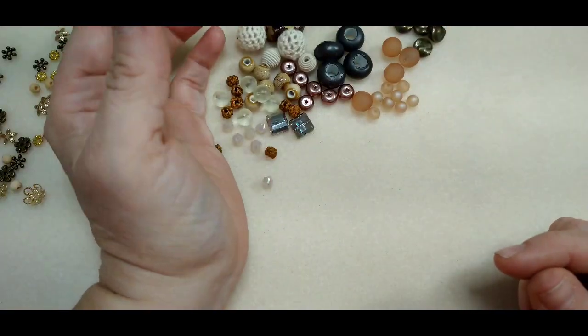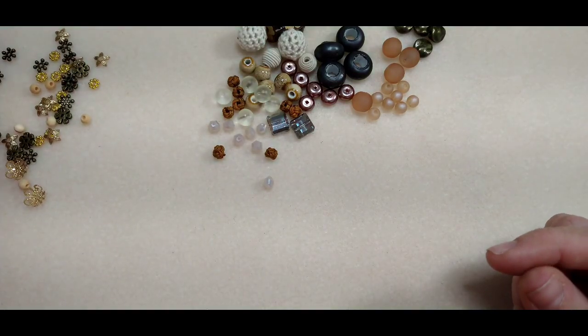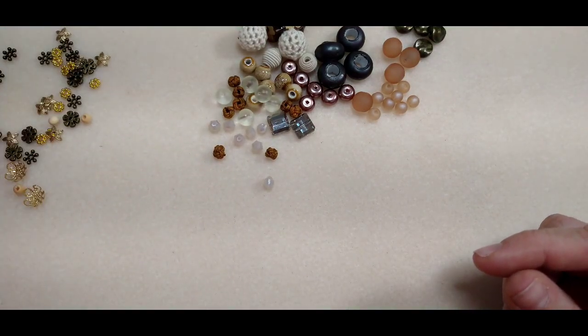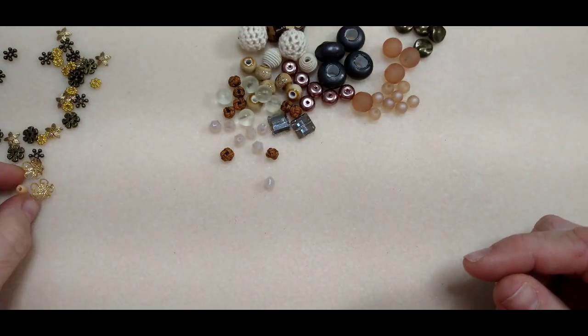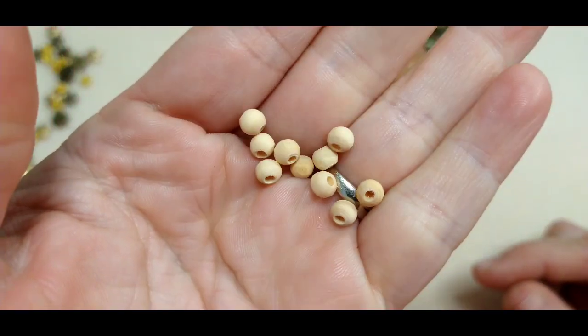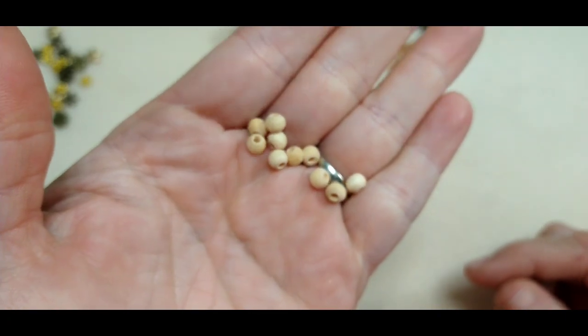Okay, and then we have some little wooden spacer beads. I'll try to get all of them, pick them all up here, but little tiny wooden spacers. These are like 5mm I would say.